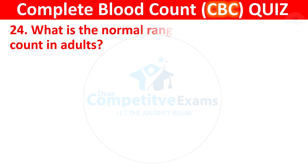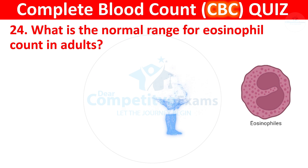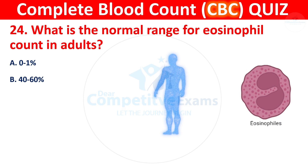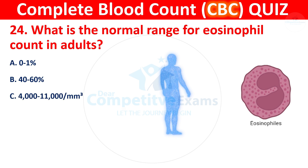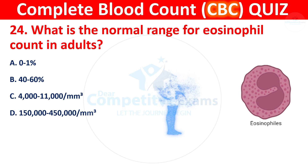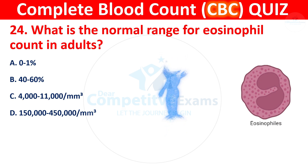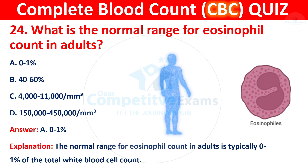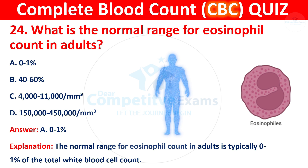Question 24: What is the normal range for eosinophil count in adults? Your options are 0–1%, 40–60%, 4,000–11,000, or 1,50,000 to 4,50,000. The correct answer is A, 0–1%. The normal range for eosinophil count in adults is typically 0–1% of the total white blood cell count.